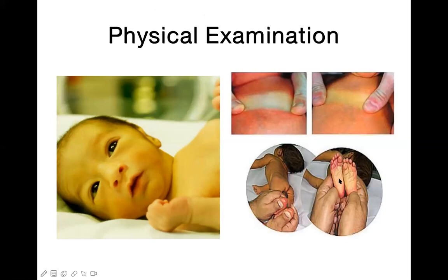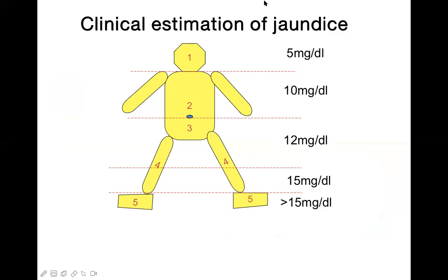Using Kramer's zones: if you press on the soles and they are yellow, jaundice is severe — likely more than 15 mg/dL. If jaundice is only in the face/head area, bilirubin is around 5 mg/dL. If it reaches to the umbilicus it is about 10, to the knee joint about 12, to the lower limbs (feet not yellow) about 15, and if the feet are also yellow, bilirubin is more than 15 mg/dL. This clinical estimation roughly matches the TSB level.